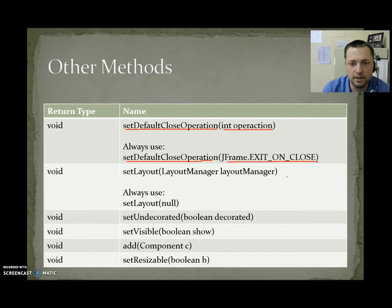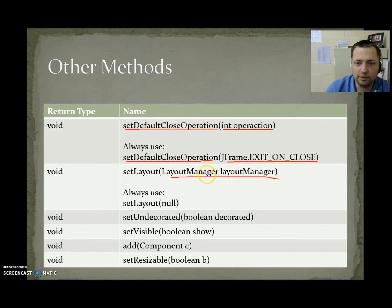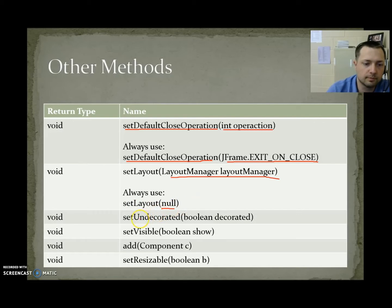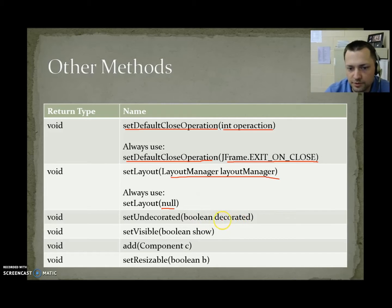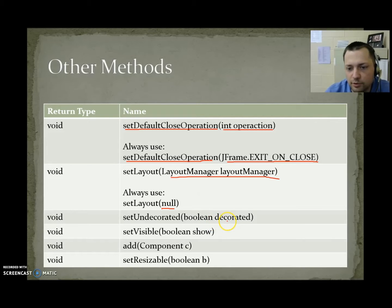setLayout(LayoutManager) — we're not going to get into layout managers right now, so we're always going to pass null: we do not intend to use a layout manager. setUndecorated(boolean): if you send false, it doesn't show the frame title or any borders — it will be undecorated. If you send true, the frame will have a title bar and window bordering — it will be decorated.